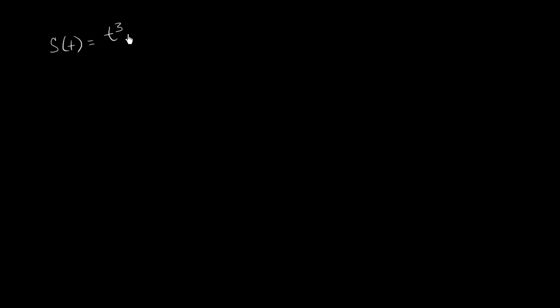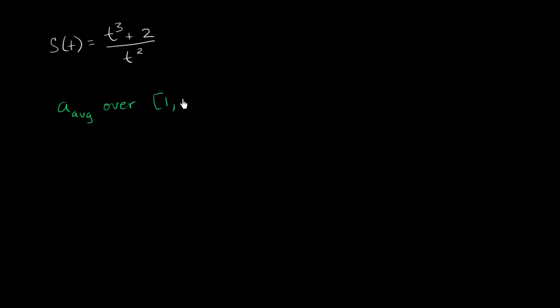Let's say that we have a particle that's traveling in one dimension, and its position as a function of time is given as t to the third power plus two over t squared. What I would like you to do is pause this video and figure out what the average acceleration is of this particle over the closed interval from t equals one to t equals two. What is this going to be equal to?